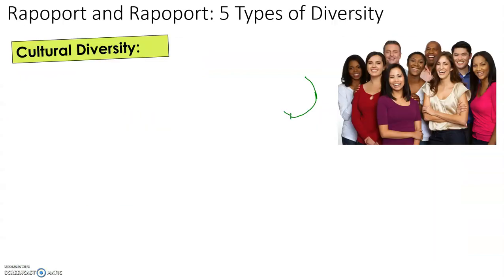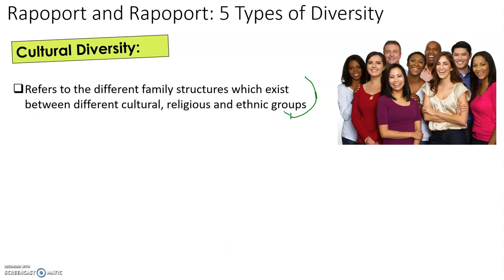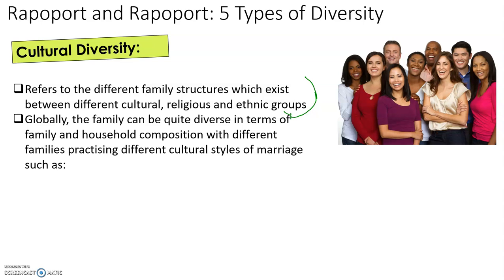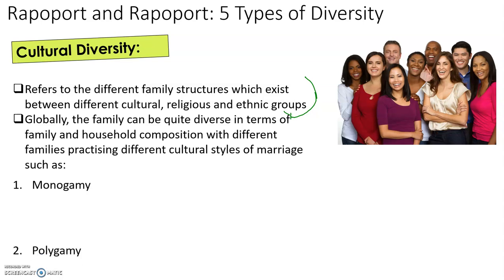The second type of diversity is cultural diversity — how family structures can be different depending on culture, religion, and ethnic group. Globally, the family can be quite diverse. In different cultures there are different family structures; perhaps women are in control, perhaps men are in control. There are also different styles of marriage, such as monogamy, polygyny, and polyandry.